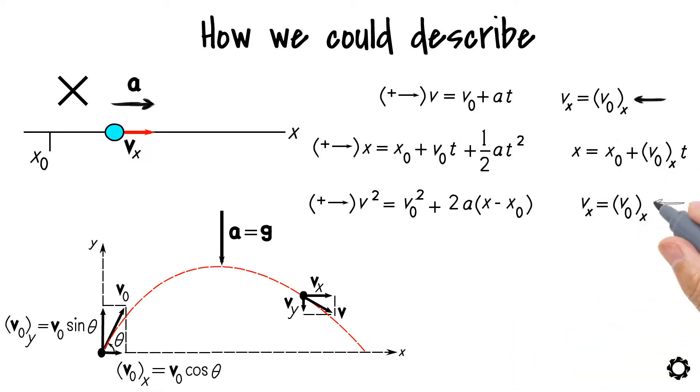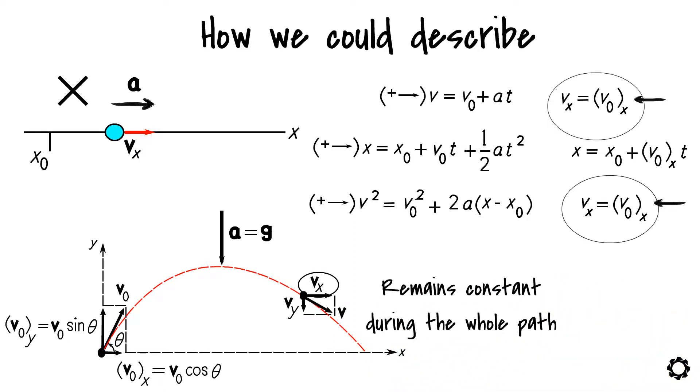Note that the first and the last equations which we have obtained indicate that the horizontal velocity of our projectile remains constant during the whole path. Thus, these equations are not independent, but the second equation is.